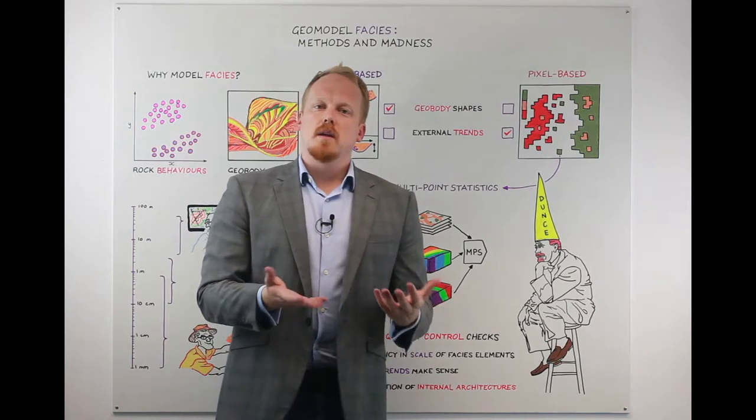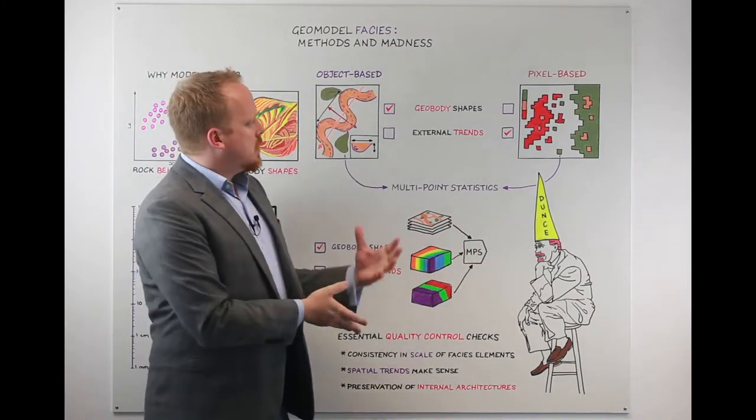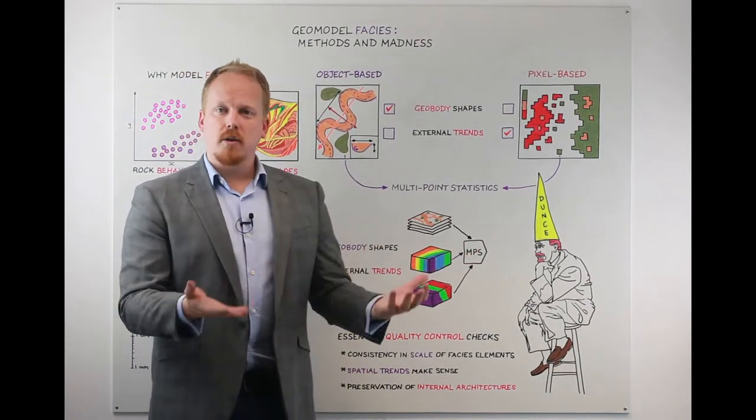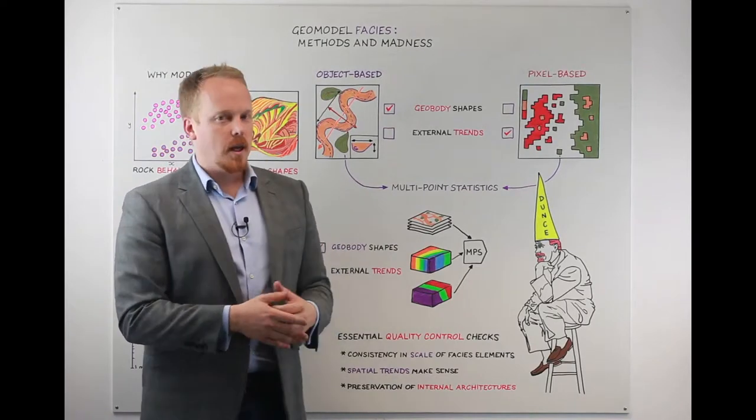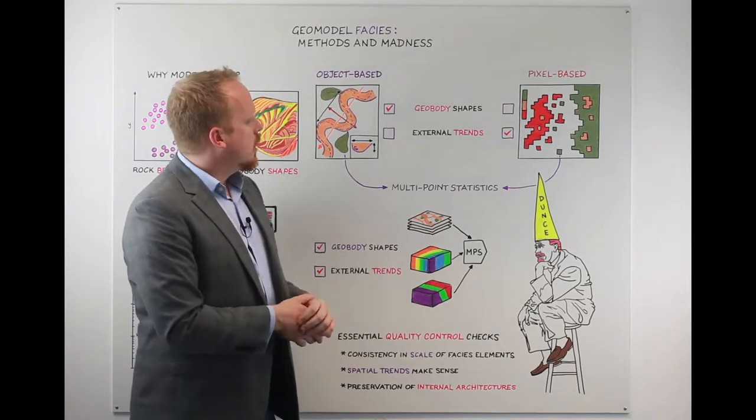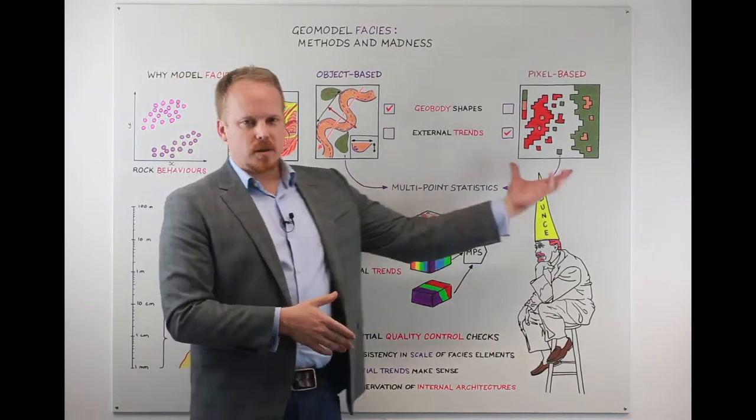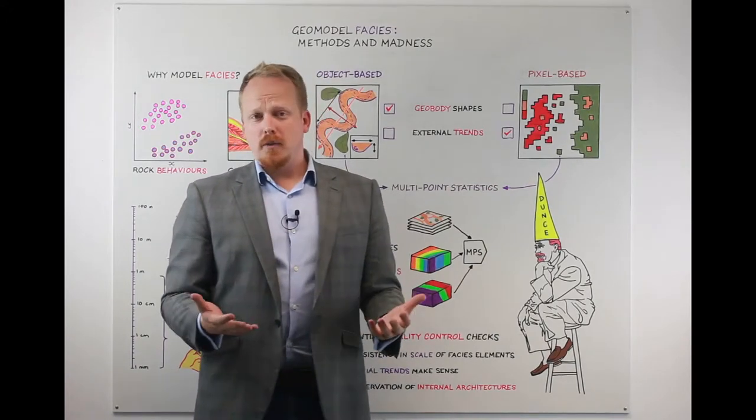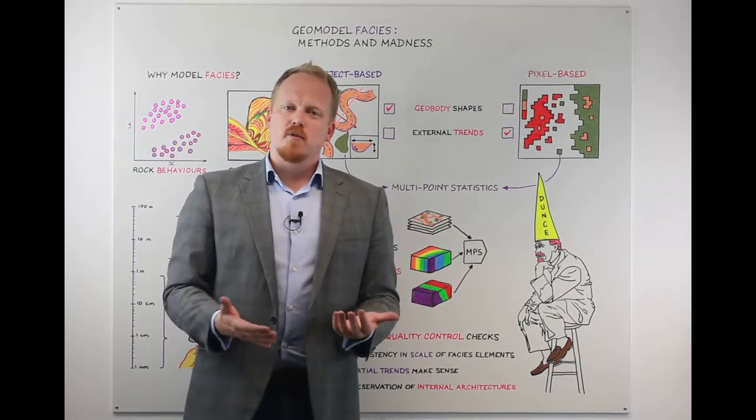And when we do we come then into the geomodeler's realm. The geomodeler gets the choice of how they're going to try to distribute those properties and they're not all that easy to do. The traditional object-based and pixel-based methods are still out there and still in use and still add lots of value.